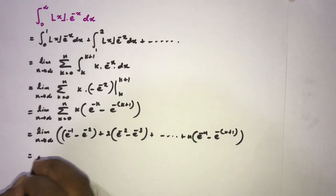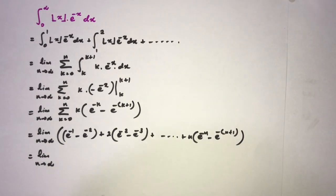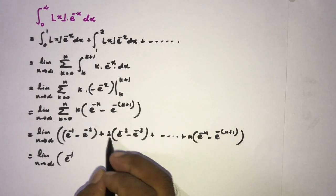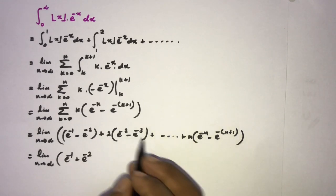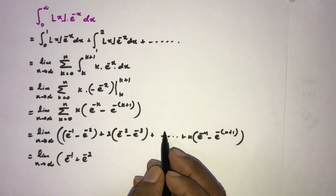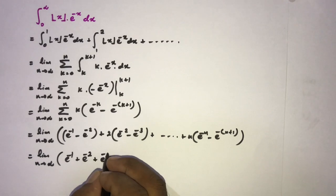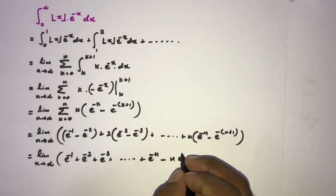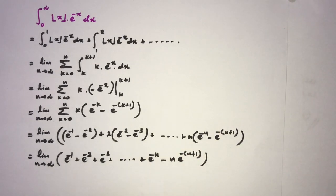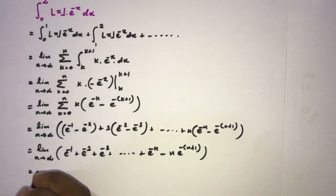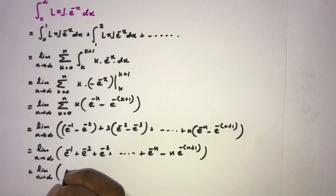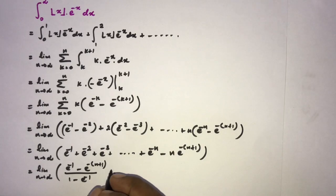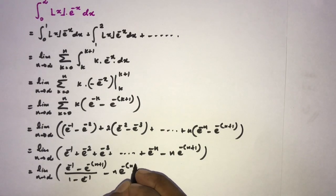Simplifying by collecting like terms: e to the minus 1, then (minus e to the minus 2 plus 2e to the minus 2) gives plus e to the minus 2, then plus e to the minus 3, and so on up to e to the minus n, minus n times e to the minus (n+1). This is a geometric series with first term e to the minus 1, and we apply the formula: (e to the minus 1 minus e to the minus (n+1)) divided by (1 minus e to the minus 1), minus n times e to the minus (n+1).